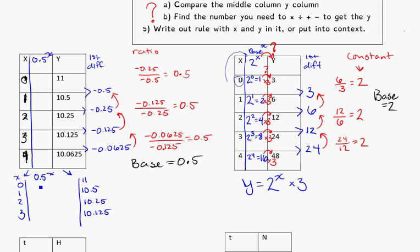So 0.5 to the power of 0. 0.5 to the power of 0 in my calculator, that equals 1. Next one, 0.5 to the power of 1, that's going to give me 0.5. 0.5 to the power of 2 gets me 0.25. And 0.5 to the power of 3 gets me 0.125.